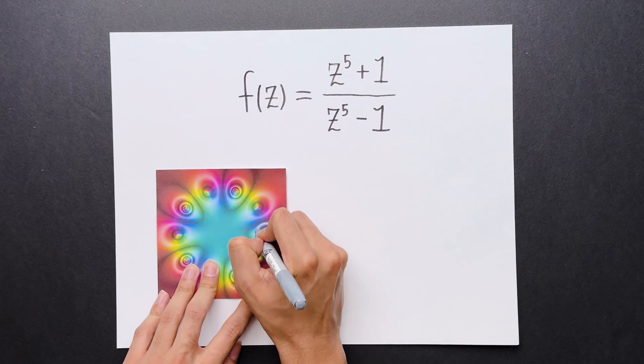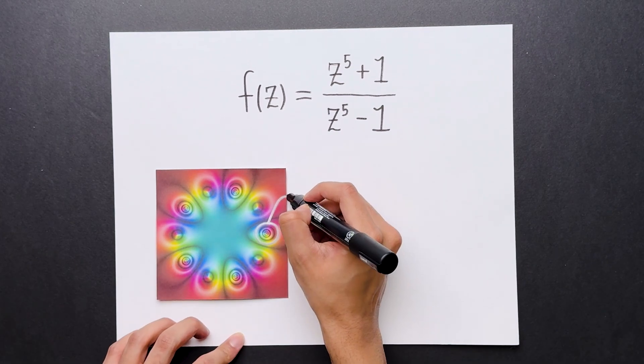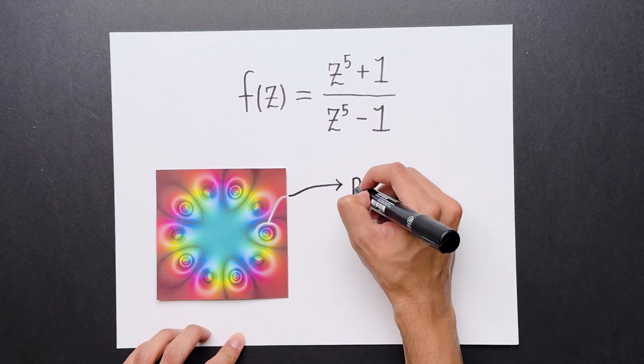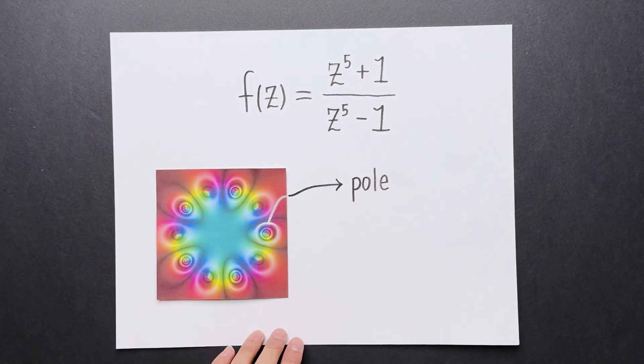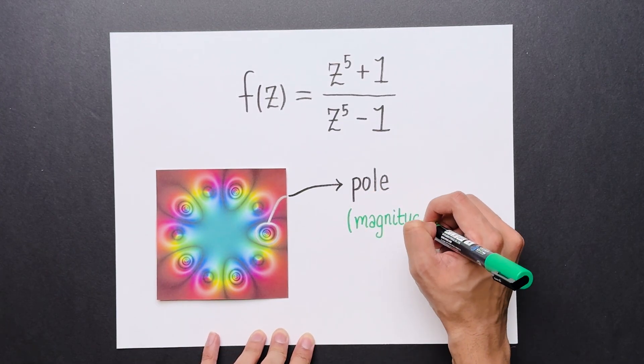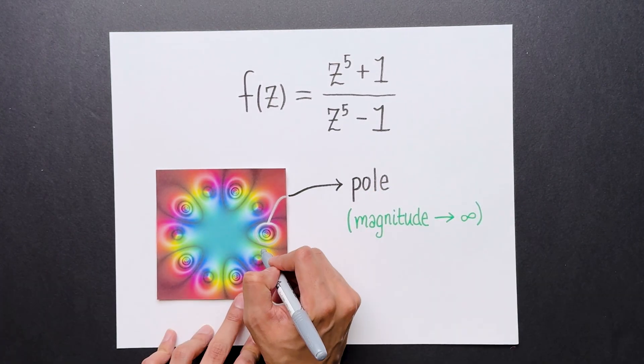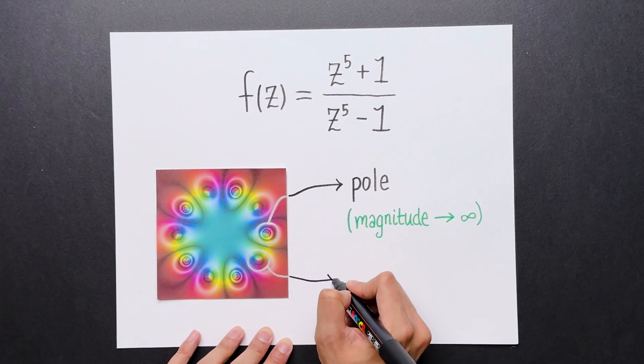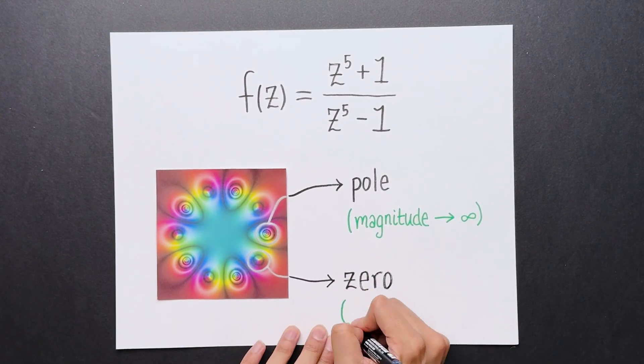The wrinkles in the graph are lines of constant magnitude. A region like this, where the lines are very close together, the magnitude of the function goes to infinity. This region is called a pole. A region like this, where the wrinkles aren't densely packed, is a zero of the function, a point where the function equals zero.